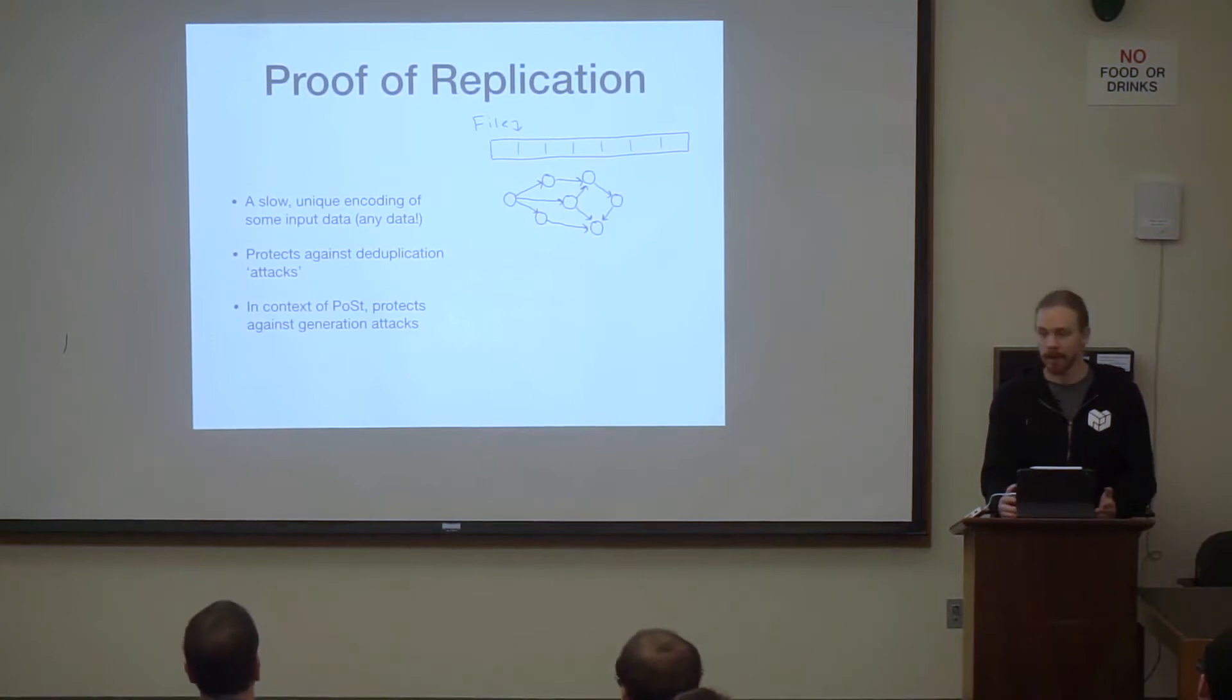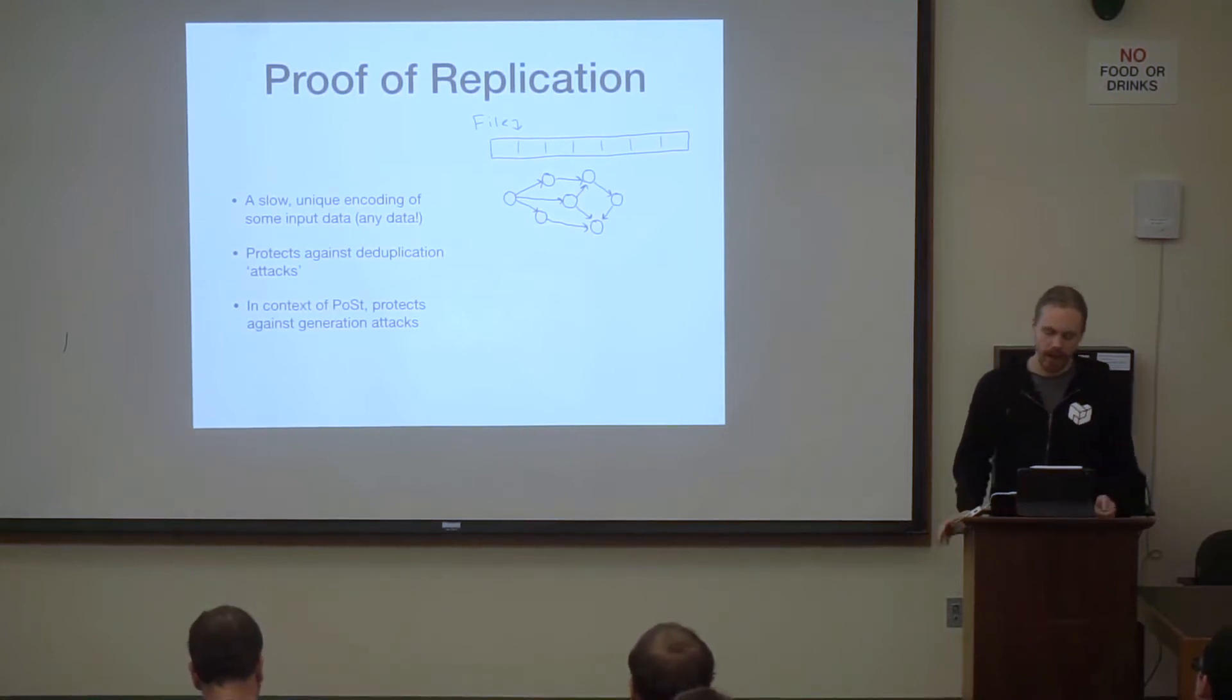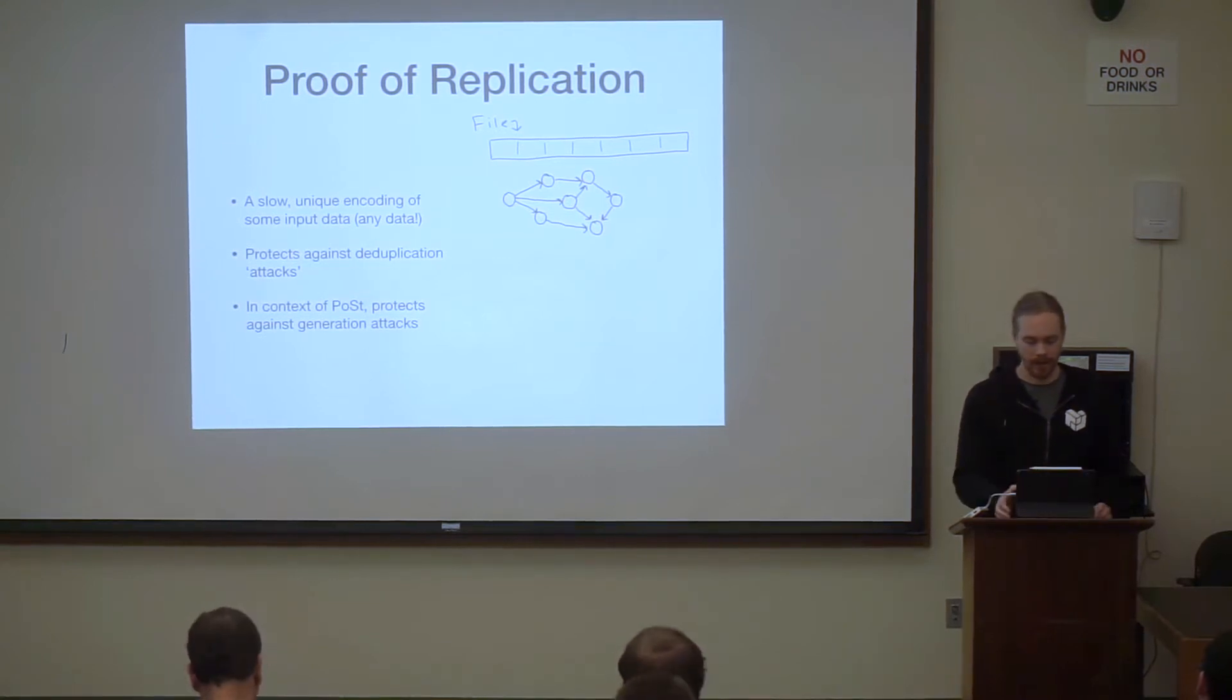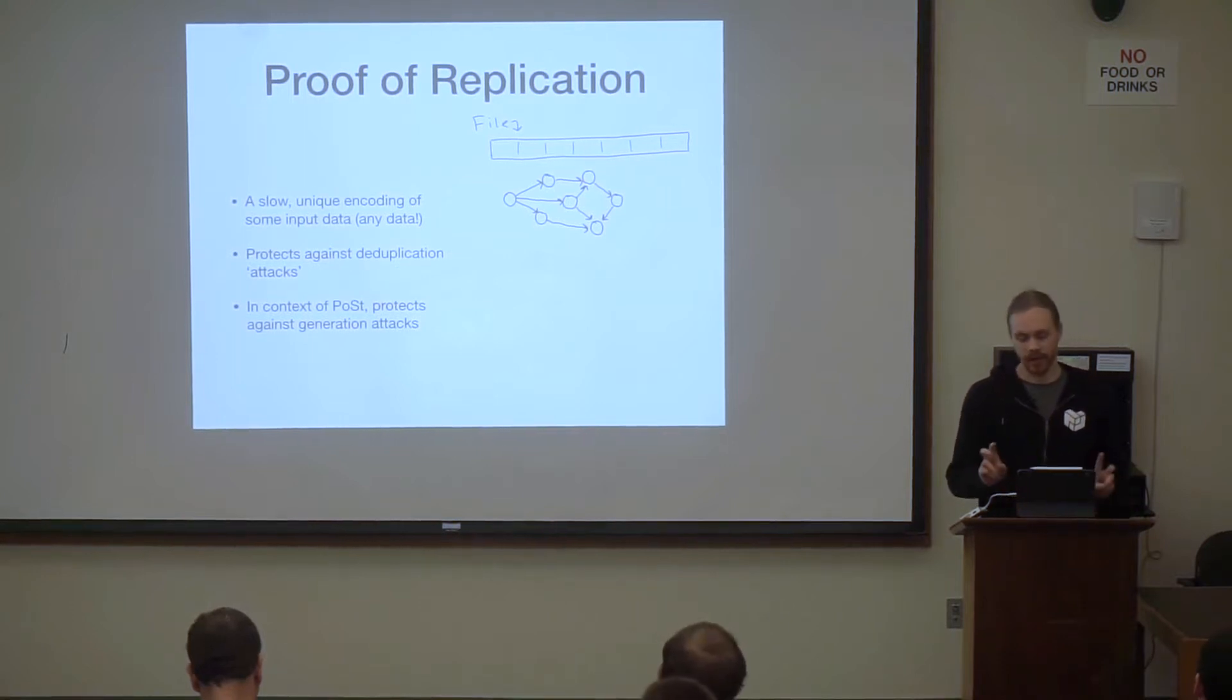So proof of replication, for those who are unfamiliar, is a slow, unique encoding of some input data. It can be any data. It protects against deduplication attacks. This is important when you're giving people some resource based on the number of replicas they have. And in the context of proof of space-time, this protects against what's called the generation attack.